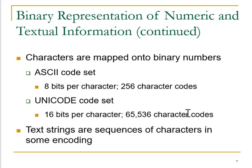Since we are talking about representing numeric and textual information, these will be represented in terms of characters which are mapped into binary numbers, because textual information is nothing but a character. To represent that we use the ASCII code set, which is 8 bits per character, giving 256 character codes. Another way of representing is the Unicode code set — 16 bits per character, or 65,536 character codes — and text strings are represented as sequences of characters in some encoding algorithm.